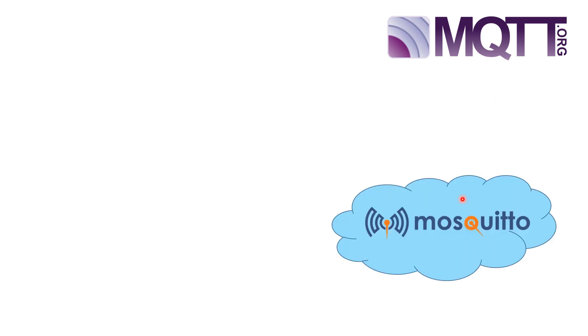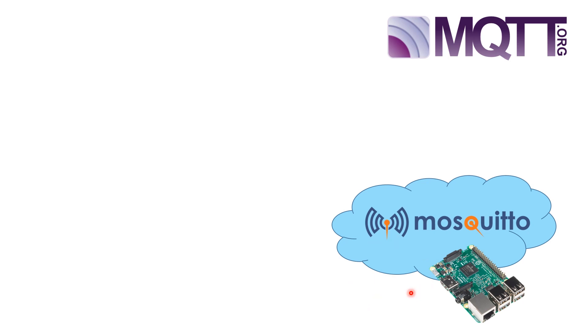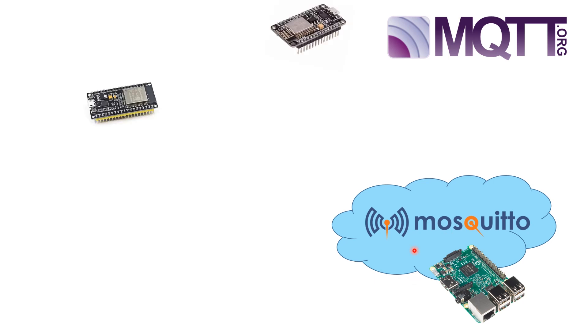Today we're going to look at the MQTT protocol — a way of communication between microcontrollers and brokers. We'll look at the Mosquitto broker in particular, which can be easily hosted on a Raspberry Pi, so the effective cost and CPU overhead is very low. This makes it quite useful for DIY enthusiasts who want to create a centralized broker for their IoT applications.